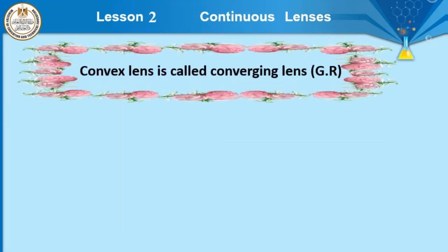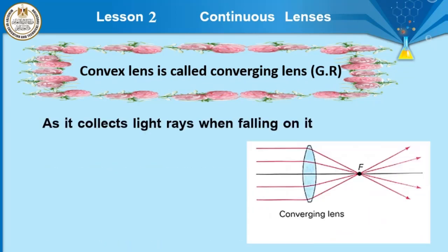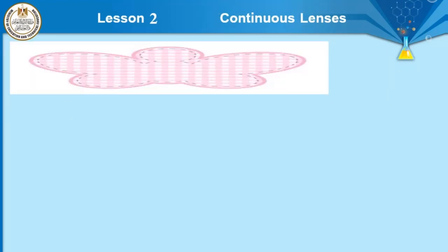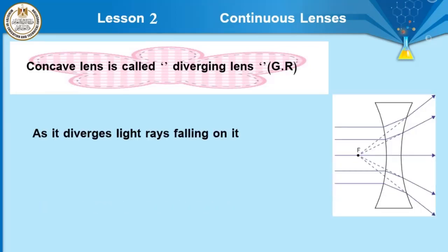The second type of lens is concave lens, which is called diverging lens, as it diverges light rays after falling on it. We know that convex lens is called converging because it collects light rays when falling on it. Concave lens is called diverging, as it diverges light rays falling on it.